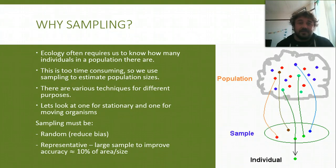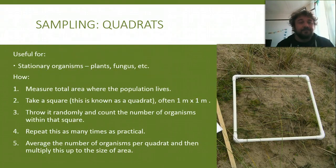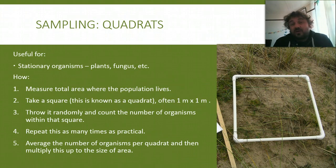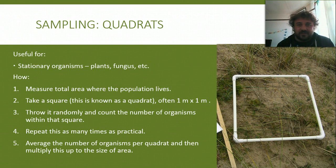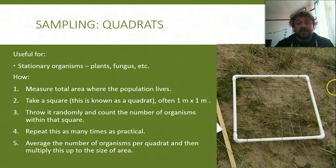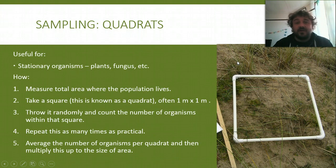Not always possible, but this is the sort of thing you talk about in your discussion when you write it up. Quadrats are really useful for stationary organisms like plants, fungus, moss, etc. You basically measure the total area where the population lives. Take a square — there's a quadrat — it can be a 1×1 metre square, or you can divide the whole area up into grids.